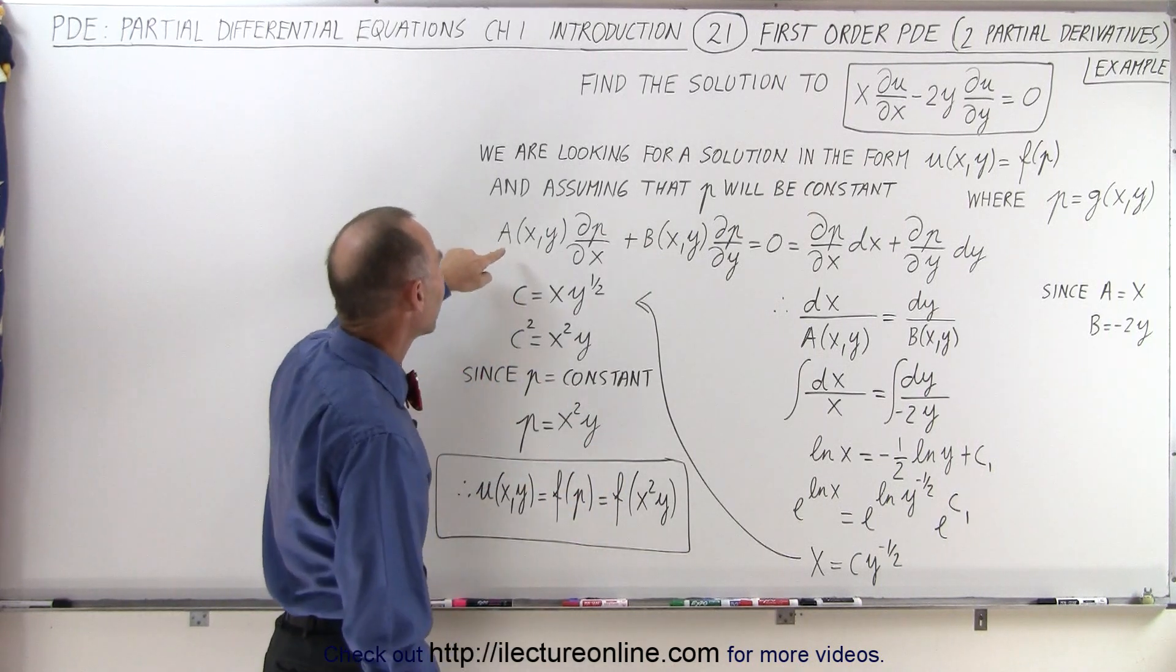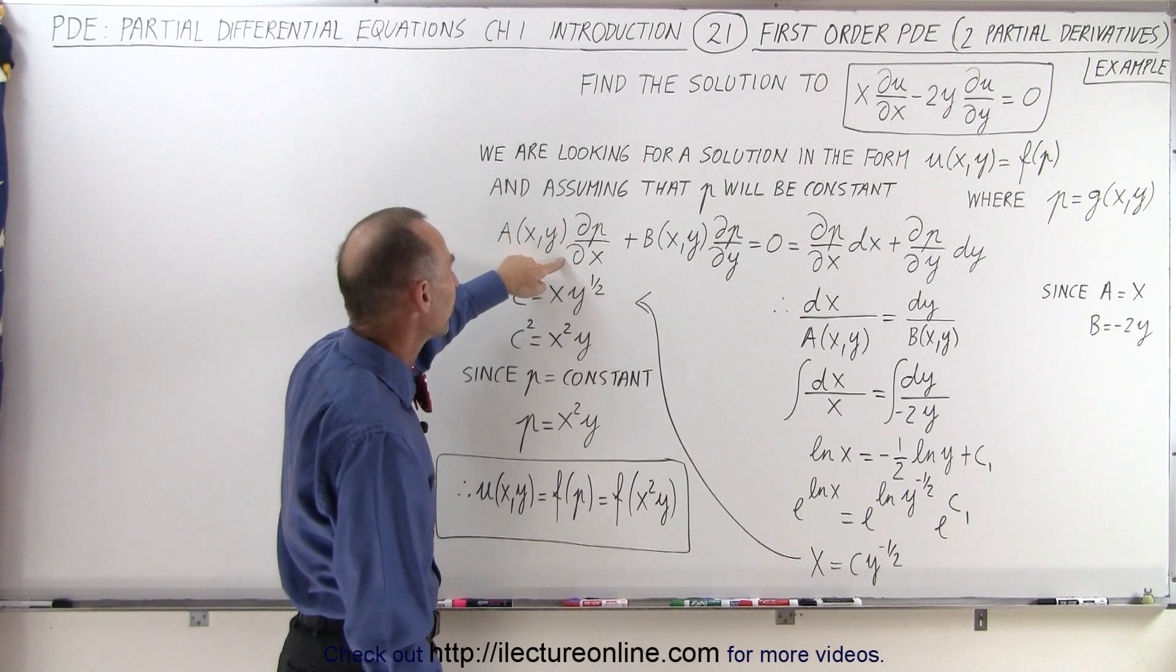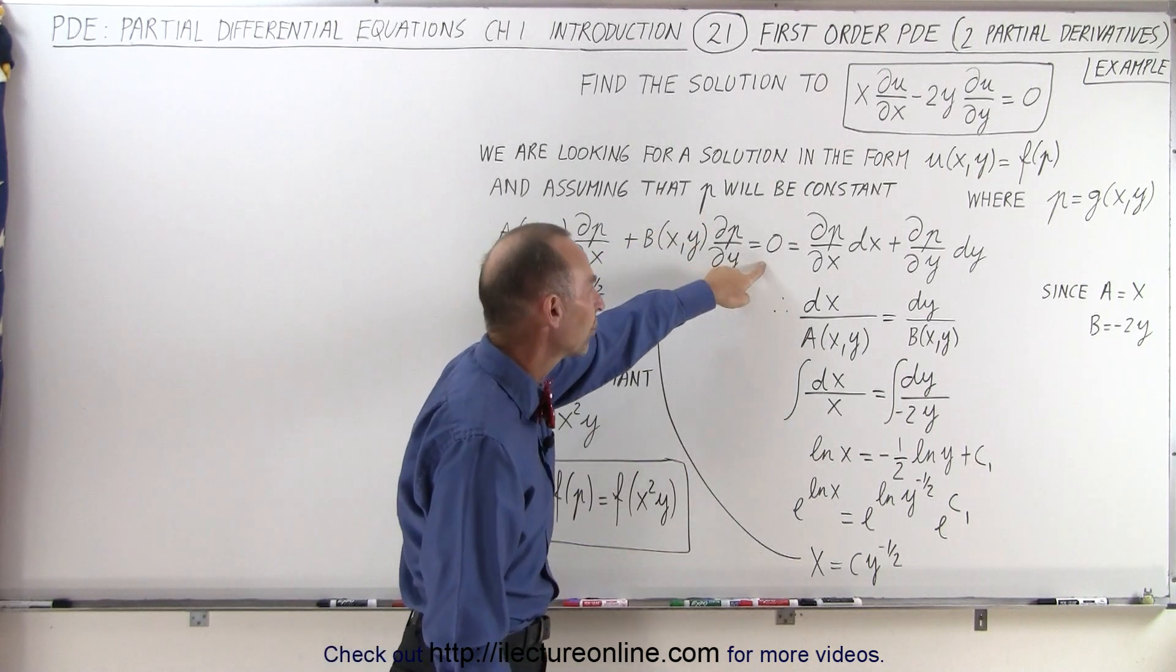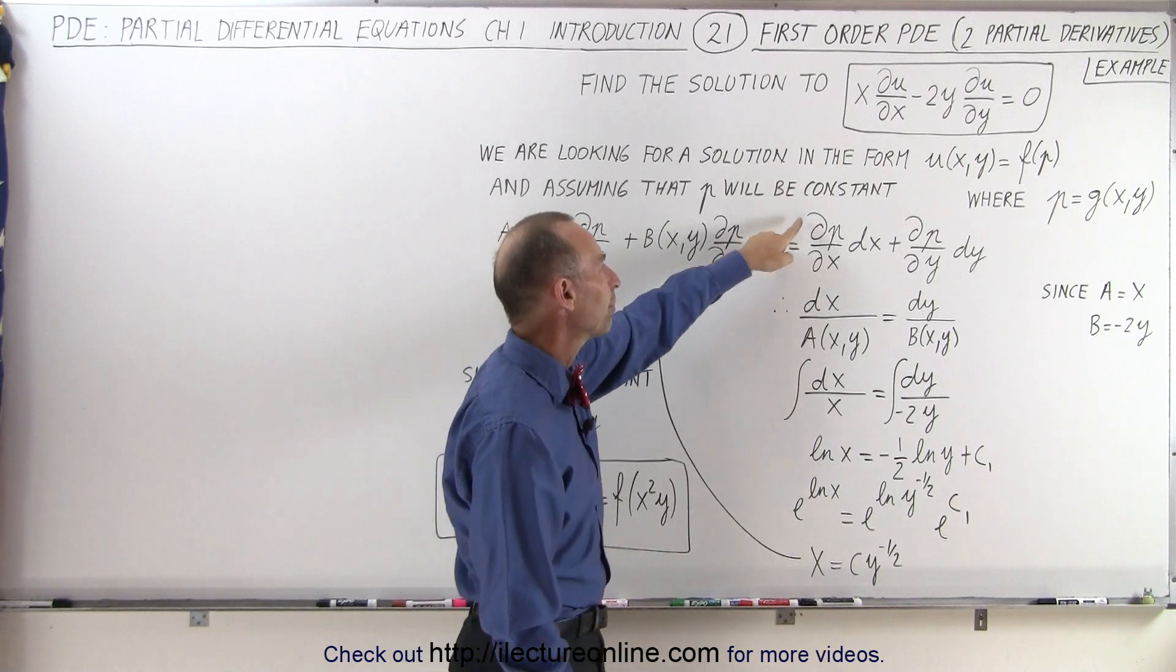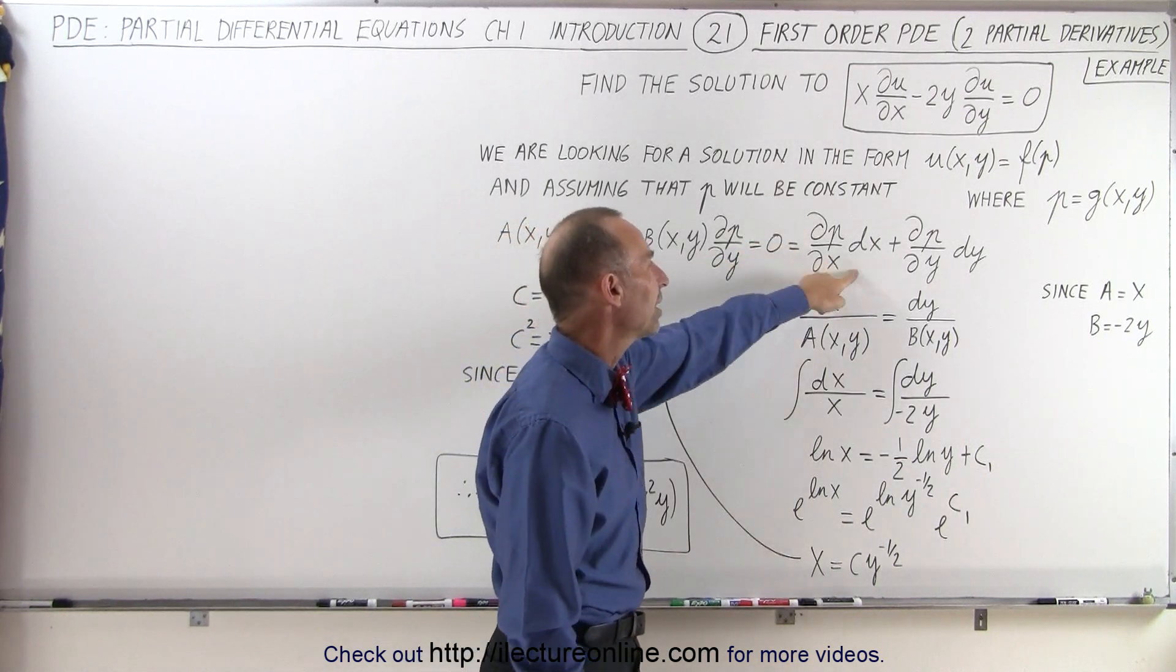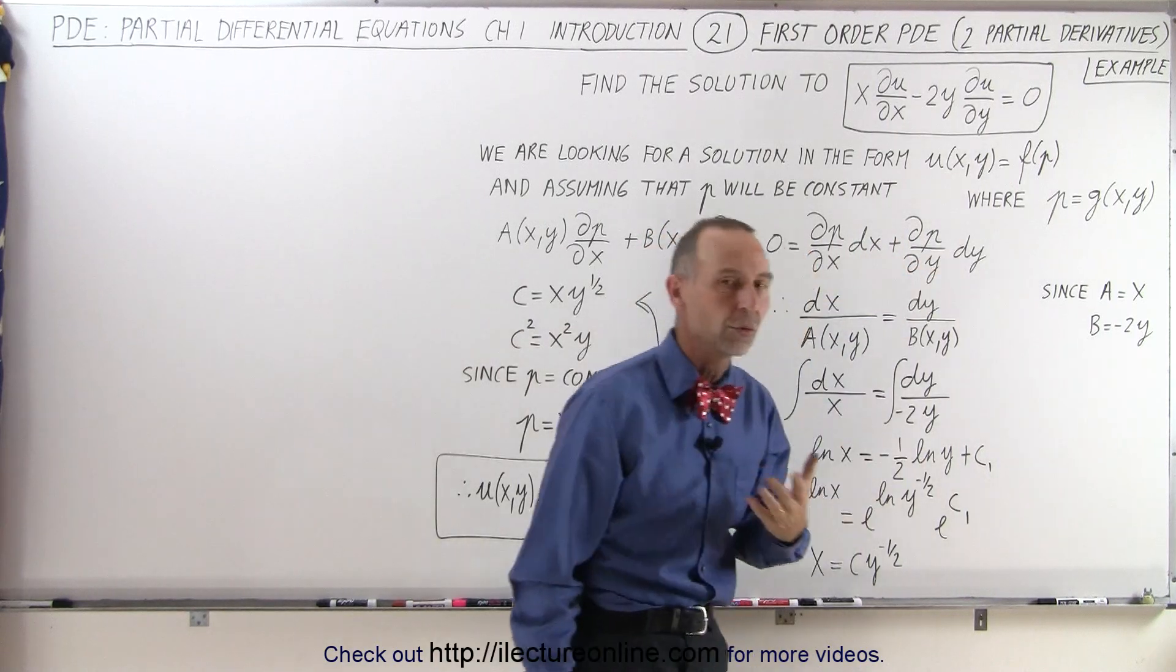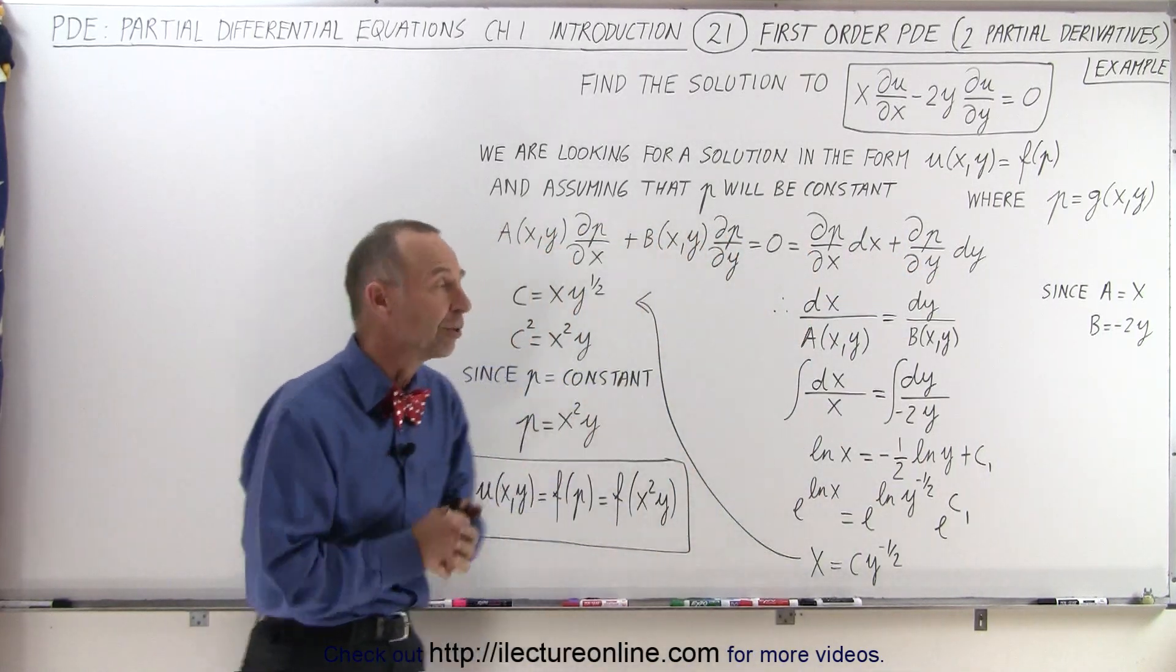So we realized then that a times the partial of p with respect to x plus b times the partial of p with respect to y had to be equal to zero, which also meant that the partial of p with respect to x times dx plus the partial of p with respect to y times dy were also equal to zero. And that's what we found in the previous video.